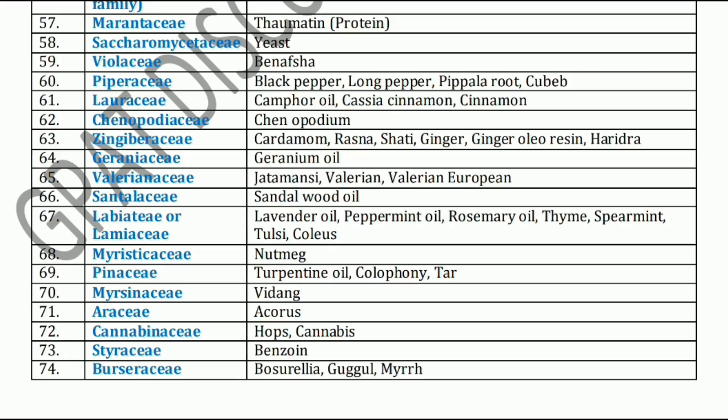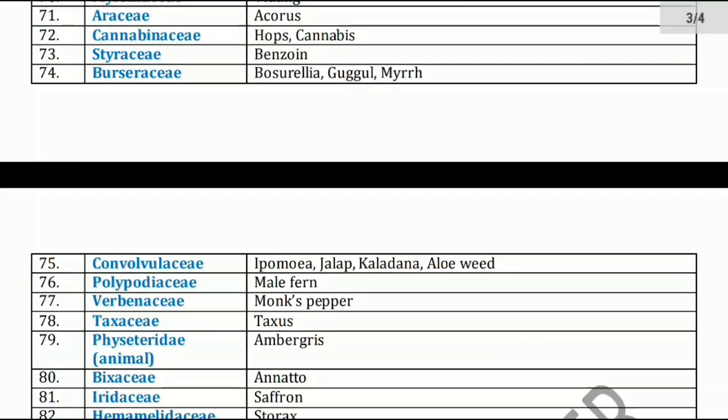Next, Cannabinaceae family. Cannabinaceae family has Hops and Cannabis. Next, Styraceae family. Styraceae family includes Benzoin. Next, Burseraceae family. Burseraceae family has Boswellia, Guggul, and Myrrh.